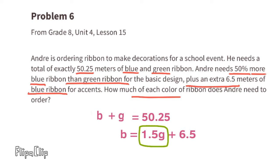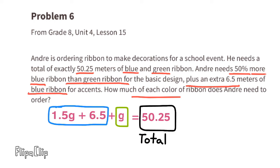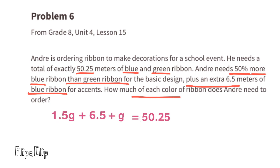The amount of blue ribbon equals 1.5 times g, plus an extra 6.5 meters for accents. Substituting into our equation, we get 1.5g plus 6.5 plus g equals 50.25. This portion represents the blue ribbon, this portion represents the green ribbon, and the total represents all ribbon Andre needs.